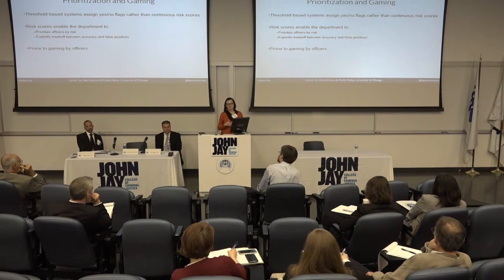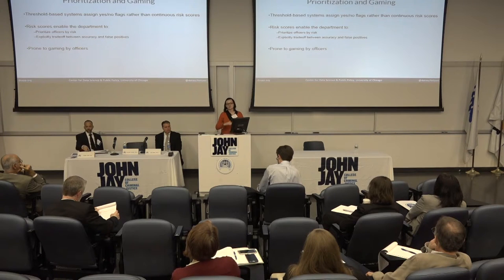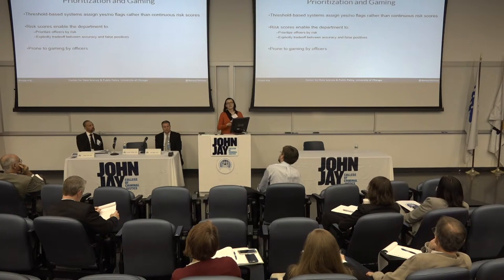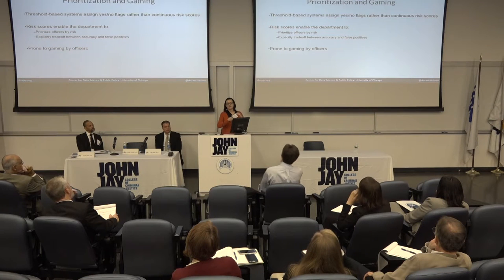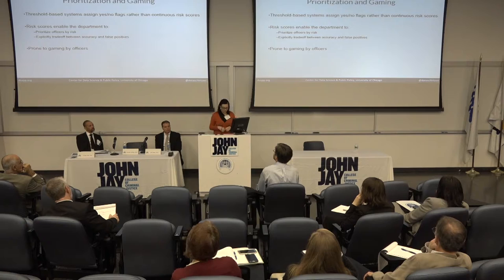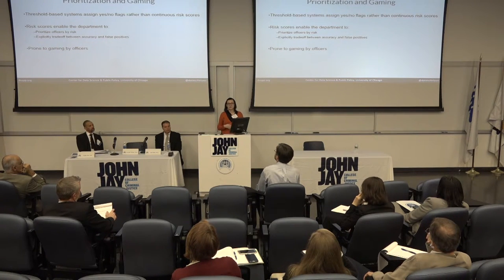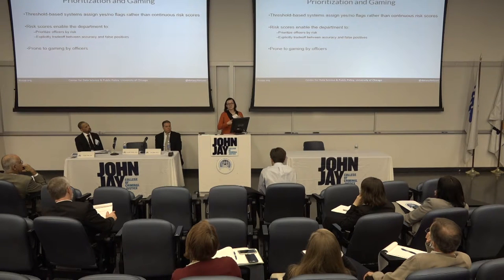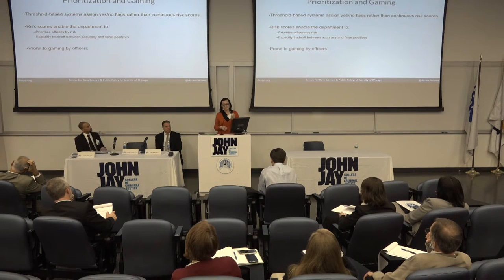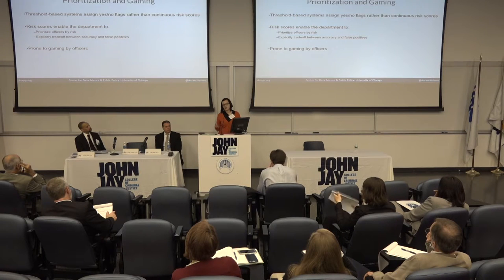Another feature of these older threshold systems is that they just flag whether there might be a problem or probably not — it's not a continuous risk score. In an ideal world, you'd want every officer prioritized by risk so you could say the top 10% should get additional training or counseling. That's what our system is able to do. If there are additional resources in a financial period, you can go further down the list, trading off between true positives — officers where there really is a problem — and false positives. There has to be some data due process there.